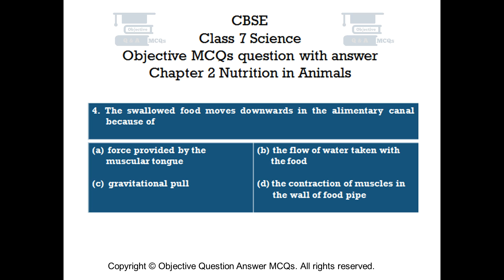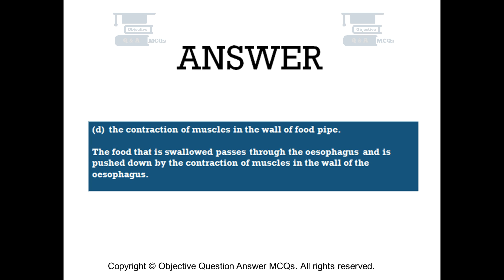Question number 4. The swallowed food moves downwards in the alimentary canal because of the contraction of muscles in the wall of the food pipe. The food that is swallowed passes through the esophagus and is pushed down by the contraction of muscles in the wall of the esophagus.